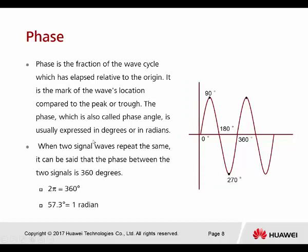The next one is phase. The phase is a fraction of the wave cycle which has elapsed relative to the origin — it marks the wave location compared to the peak or trough. We have 90 degrees, 180, 270, and 360. We can also call it a phase angle, usually expressed in degrees or radians.